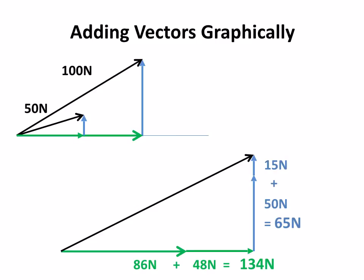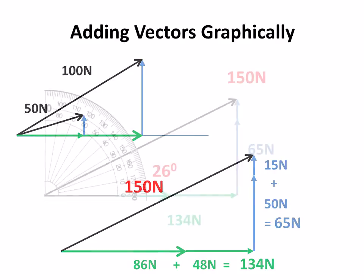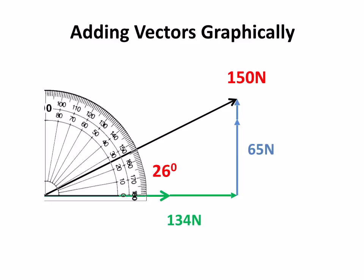And we can use Pythagoras. First of all, we're going to do it graphically. So we're going to measure this, and to the scale it gives me 150 newtons. And we can check the angle using a protractor, and that gives me 26 degrees. So my graphical representation is 150 newtons at 26.